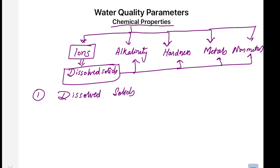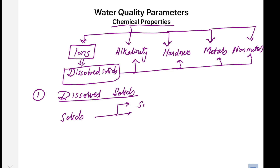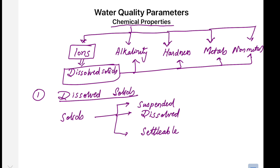In the supply water there are three types of solids present. The first type are suspended solids, which are so small they cannot settle under gravity. The second category are dissolved solids, and the third category are settleable solids. In supply water as it is pumped, the first two — dissolved and suspended solids — are present, but the settleable solids remain at the bottom of the water source.